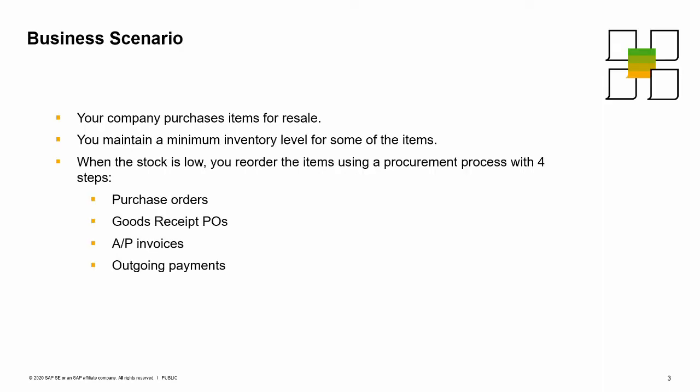In our business example, we ask you to imagine that your company purchases items for resale. You maintain a minimum inventory level for some of these items, such as printers. When the stock is low on those items, you reorder the items using a procurement process with four steps: purchase orders, goods receipt POs, AP invoices, and outgoing payments to the vendor.